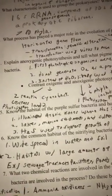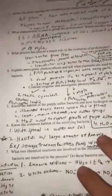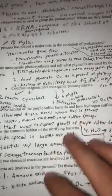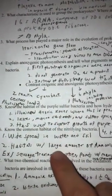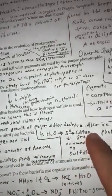Know the habitat of purple sulfur bacteria and how hydrogen sulfide is used. The habitat are anoxic zones where there's no oxygen and H2S needs to be present. Purple sulfur bacteria use the H2S to support growth of the bacteria themselves and use it as the electron donor.